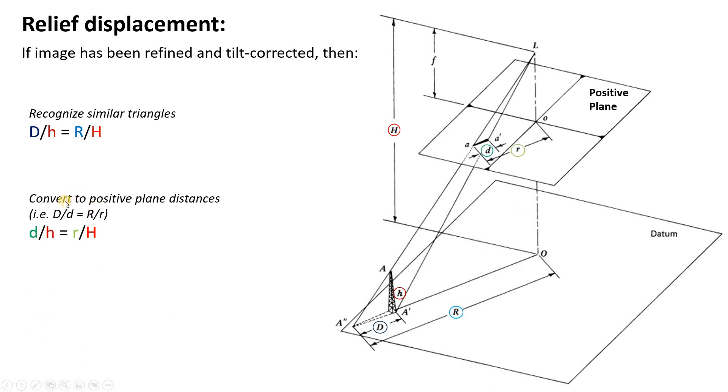We can then essentially just convert big D and big R into these positive plane distances, because we know those are proportional. So we're going to sub in little d for big D and little r for big R. And then we can just rearrange this equation to solve for little d. And once we know that number, we can literally just shift this pixel back towards the center by that amount.